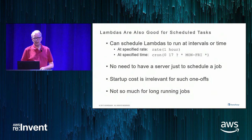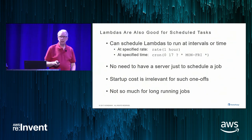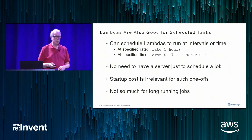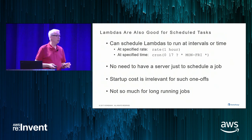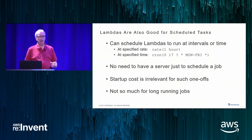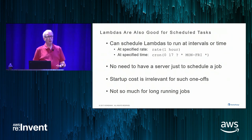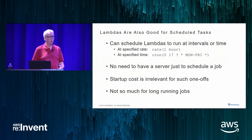Lambdas are very good for scheduled tasks — if you've got something that needs to run once an hour or at 3 PM on Tuesday, you can write a cron configuration and run a Lambda to match that timer. It's only running once an hour or once a day, so you really don't care whether it finishes in five milliseconds or two minutes. It saves you having a dedicated server just for something that needs to be scheduled.